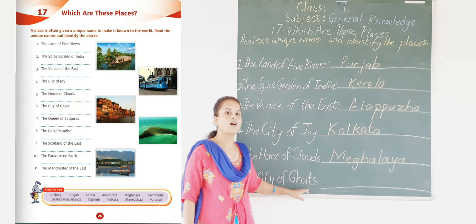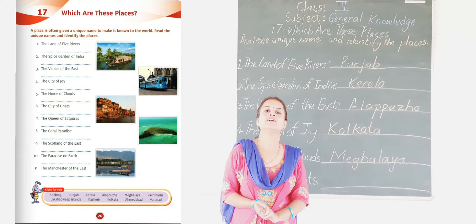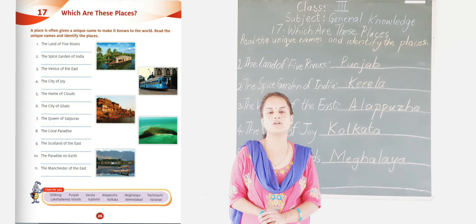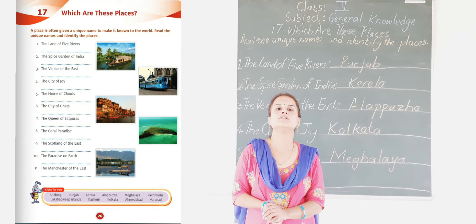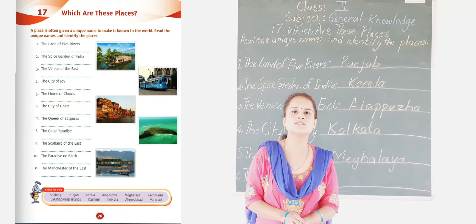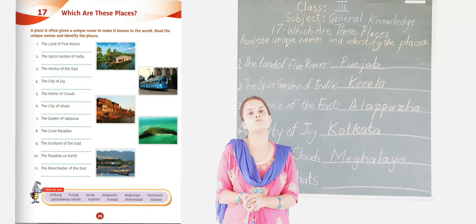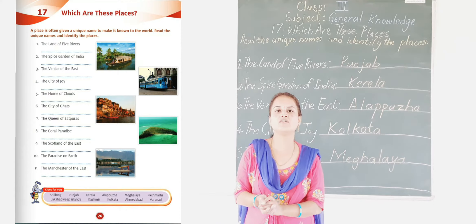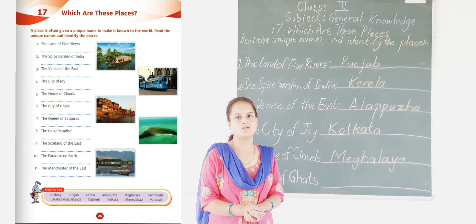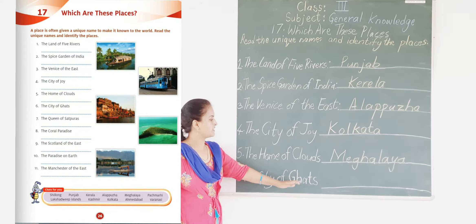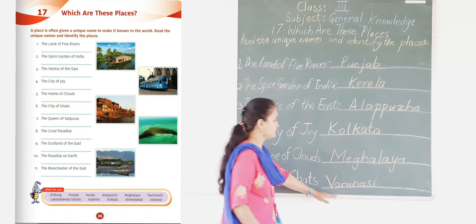Now the next one is the City of Khans. It is located in Uttar Pradesh and is a famous pilgrimage site in India. It is also known by other names: Kashi and Banaras. Many temples are located here. The river Ganga flows at this place and it is a pilgrimage site where people perform puja ceremonies and take bath in the river Ganga. This place is Varanasi, and it is also surrounded by ghats. So write down: the City of Ghats is Varanasi.